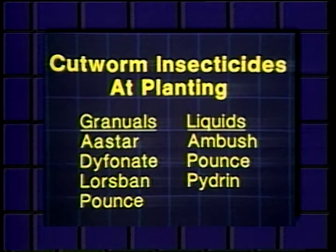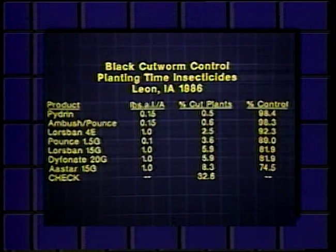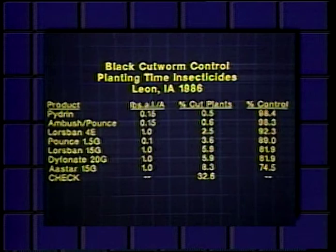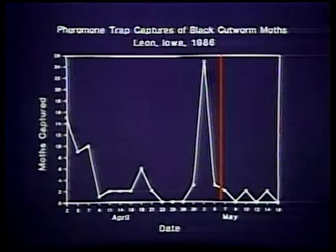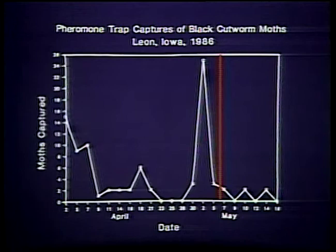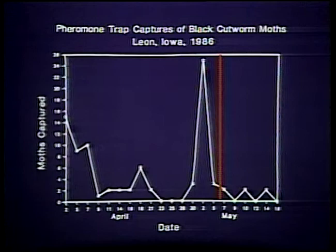For example, in this study, all the registered products performed well with control ranging from 75 to 98 percent, and this was under fairly heavy cutworm pressure. The liquid applications were at the top despite their relatively short residual activity. To understand why, we need to look at cutworm moth activity. These data suggest that essentially all the cutworm egg laying had occurred by the time the crop was planted and the insecticide was applied on May 5th. With cutworm eggs and larvae already present in the field, residual activity was not important and the products performed essentially as we would expect them to in a rescue situation.